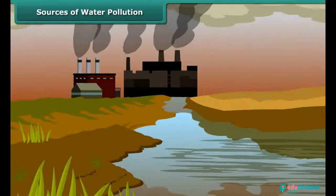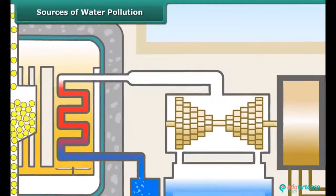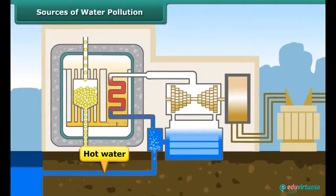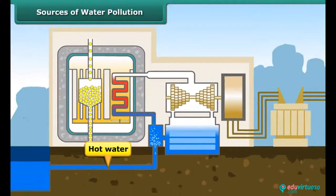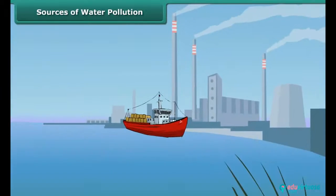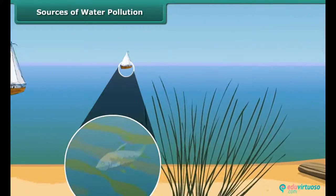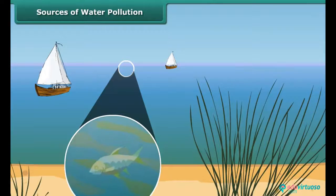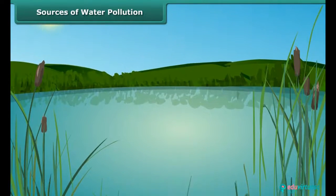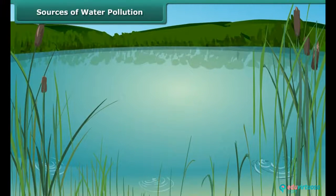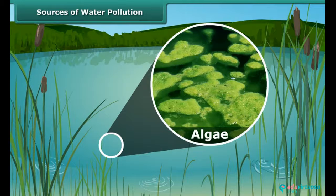Often factories and power plants use normal water to cool their machinery and then release hot water. This heats up the water body and aquatic animals die in it. Have you seen ponds which look green from a distance? This is due to algae growing in them.